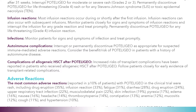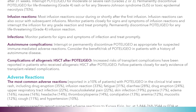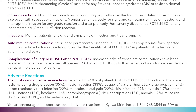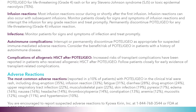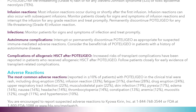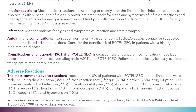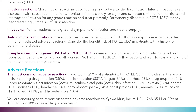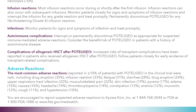Consider the benefit-risk of mogamulizumab in patients with a history of autoimmune disease. Complications of allogeneic HSCT after mogamulizumab: Increased risk of transplant complications have been reported in patients who received allogeneic HSCT after mogamulizumab. Follow patients closely for early evidence of transplant-related complications.